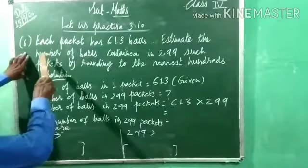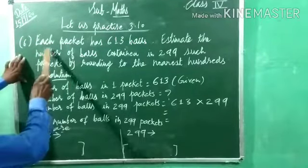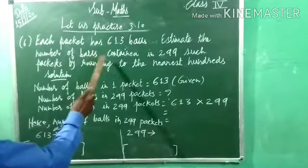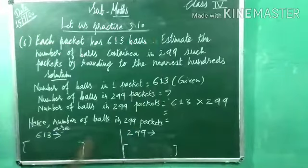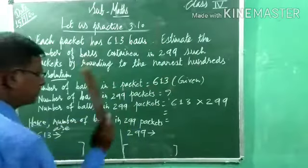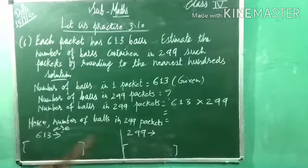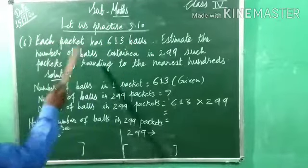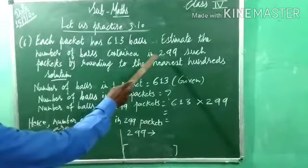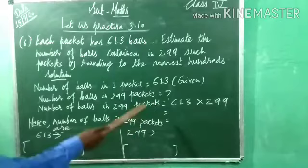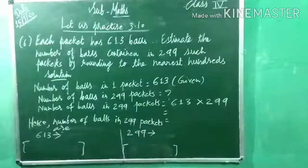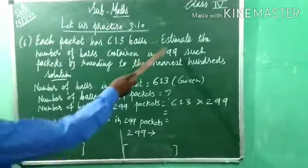The sixth example is similar. Each packet has 613 balls. Estimate the number of balls contained in 299 such packets by rounding to the nearest hundred. Number of balls in one packet equals 613. Number of balls in 299 packets — question mark — equals 613 multiplied by 299. Estimate by rounding to the nearest 100.